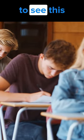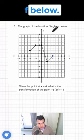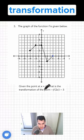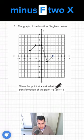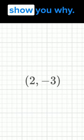If you're in grade 11, you're going to see this question on your final exam. We're given the graph f below. Given the point at x equals 4, what is the transformation of the point -f(2x) - 3? This is the answer. Now let me show you why.